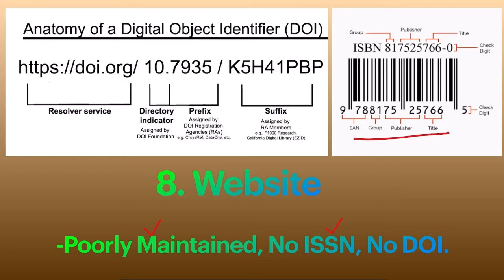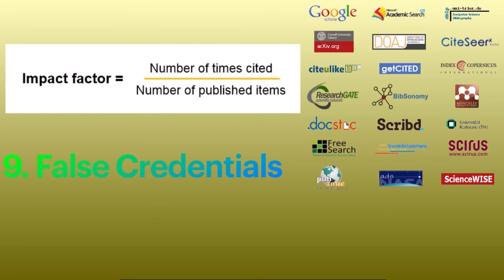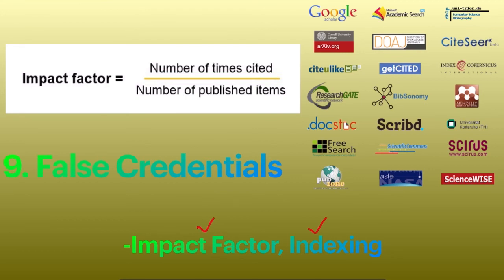There will not be any DOI — that is, Digital Object Identifier — for each of the articles. The journal displays false credentials on their site, and most commonly they make false claims about impact factor and indexing. These impact factors may not exist, or they have their own impact factor calculations and provide fake data about the impact factor.